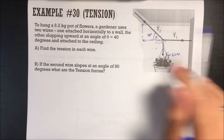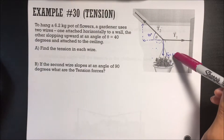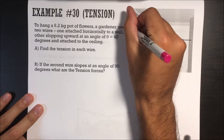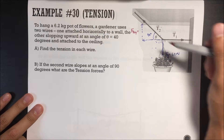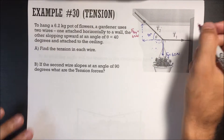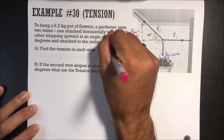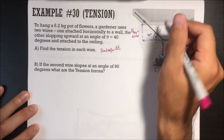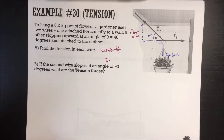Everything in the x direction must cancel out, and all forces in the y direction must cancel out. Looking at the y direction: the only forces are gravity downward and the y-component of tension 2. Since these are the only two in the y direction and it's not moving, they must cancel out. So force of tension 2 in the y direction equals 62 newtons. Using sine: sine of 40 equals opposite over hypotenuse, so 62 divided by sine of 40 gives us force of tension 2 equals 96.45 newtons.